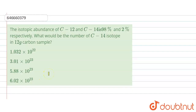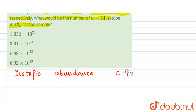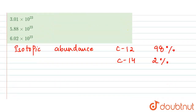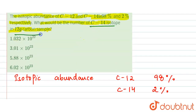The question is: the isotopic abundance of C-12 and C-14 is 98% and 2% respectively. What would be the number of C-14 isotopes in a 12-gram carbon sample? We are given the isotopic abundance of the C-12 isotope as 98% and for C-14 it is 2%. We need to find the number of C-14 isotopes in the 12-gram sample.